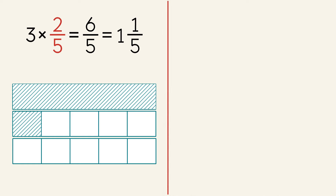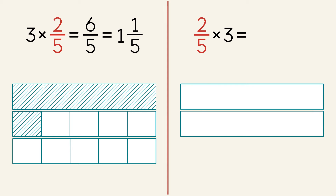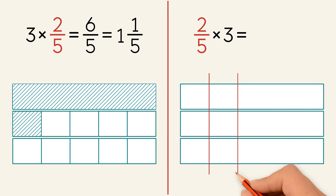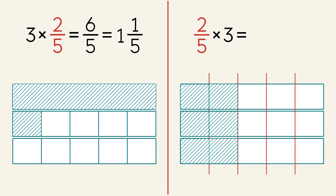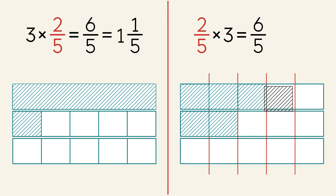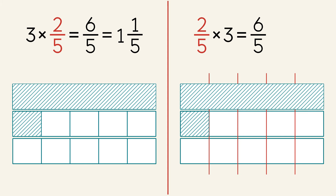Now let's do the same example, but we're going to flip the factors. We have two-fifths times three. This is the same as finding two of five parts of a group of three. One group, two groups, and three groups. We divide the groups into five parts and we shade two of them. We have six-fifths shaded, so six is our numerator. The denominator stays the same. Six-fifths is an improper fraction, so we have to convert to a mixed number. We regroup fifths to make a whole, giving us one whole and one-fifth, or one and one over five.